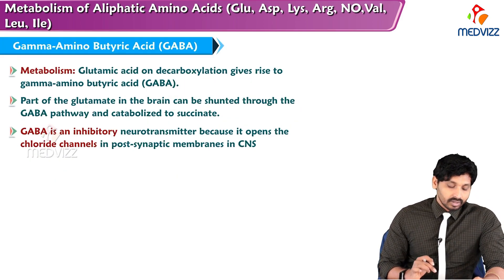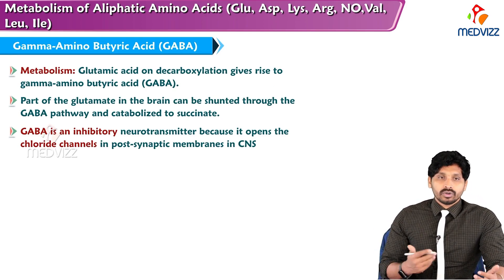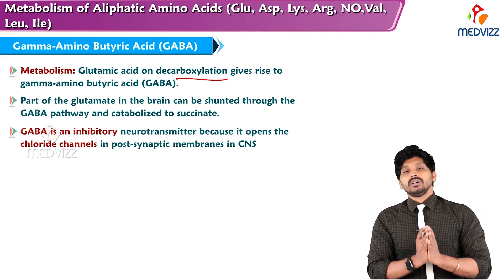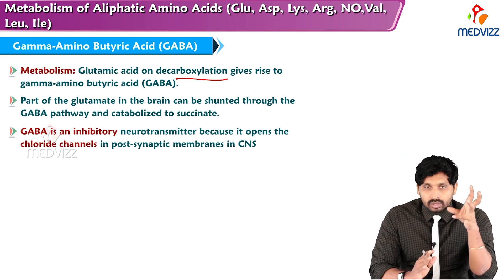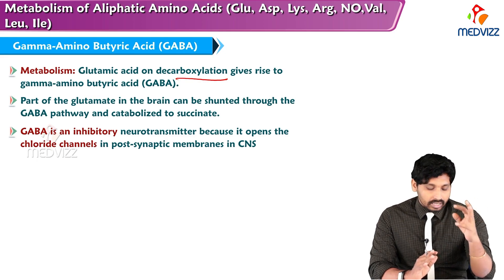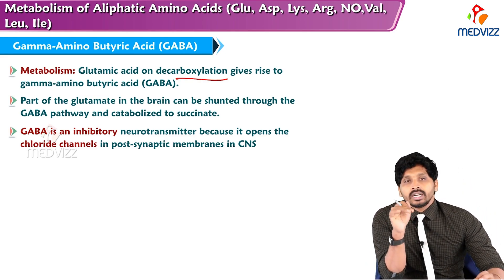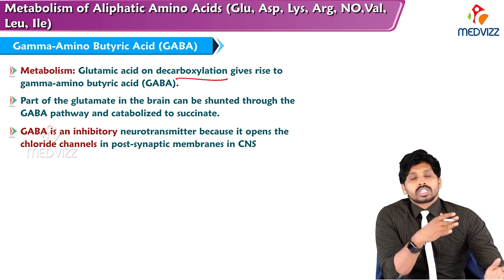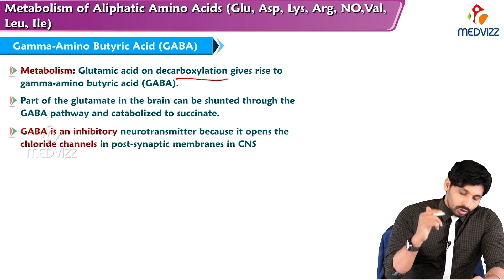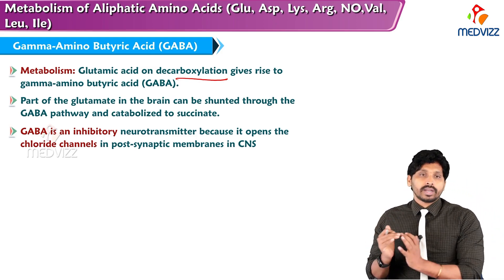Glutamic acid is decarboxylated to GABA — gamma-aminobutyric acid — which is an inhibitory neurotransmitter. In GABA formation, the carboxyl group is removed from glutamic acid (decarboxylation), without adding an amino group, giving rise to gamma-aminobutyric acid.